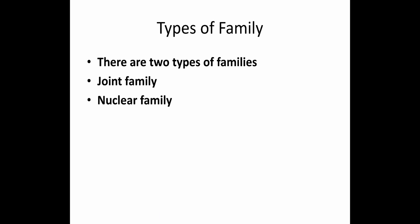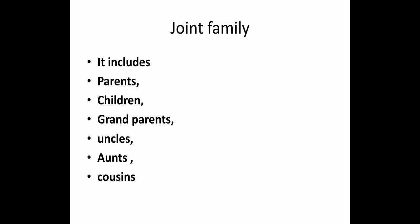There are two types of families: joint family and nuclear family. Joint family includes parents, children, grandparents, uncles, aunts and cousins. All live together in one place and they share a common kitchen. That family is called a joint family. Joint family is also called a big family.